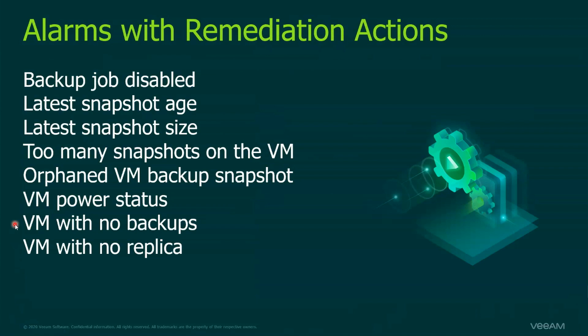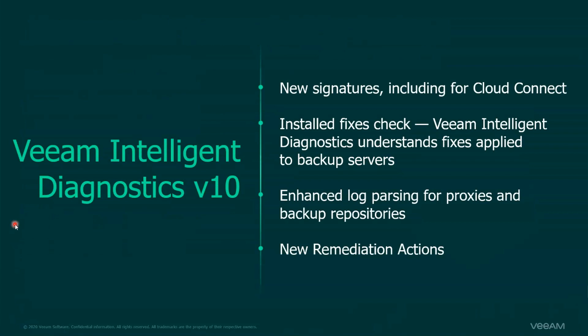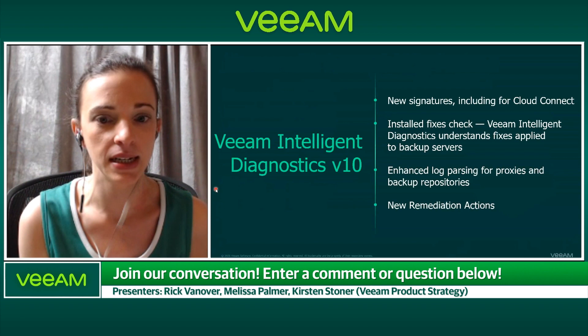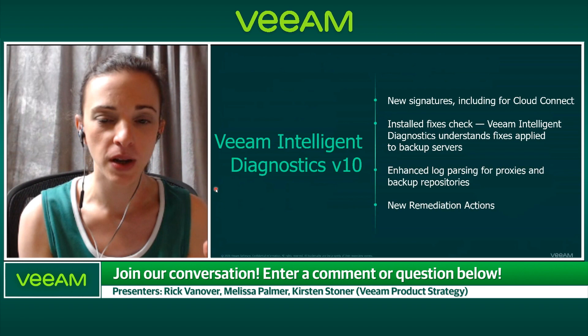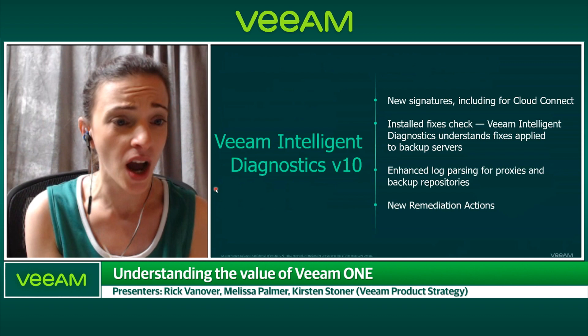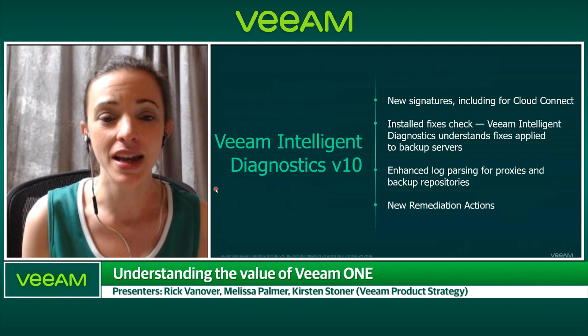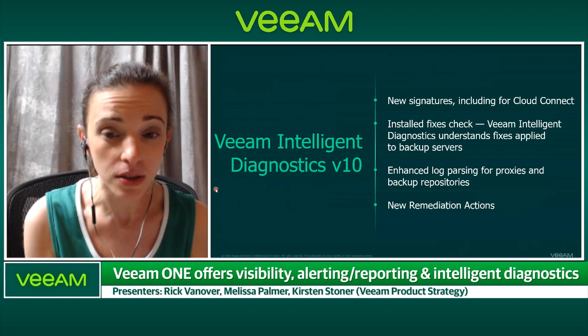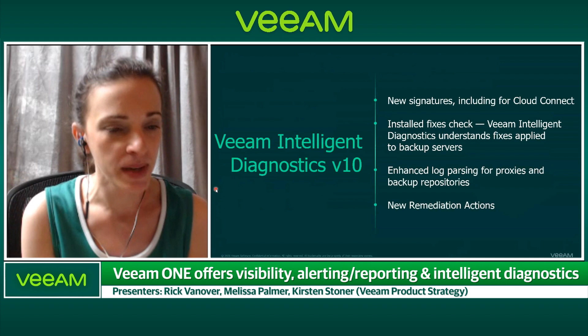I just want to take a couple minutes to go over all of the things that were brought to Veeam Intelligent Diagnostics in version 10. We added a ton of new signatures, including for Cloud Connect customers. We added a new check — now Veeam Intelligent Diagnostics understands any fixes applied to your backup server. So if you applied hotfix XYZ123, VID will know that hotfix is applied, and if there's another issue that needs that hotfix, the alarm won't be triggered because you've already got it. Enhanced log parsing — when we first debuted this feature in 9.5 Update 4, we were really focusing on the Veeam backup server, but now we can also parse logs for proxies and backup repositories. We also added more remediation actions in Veeam One version 10.